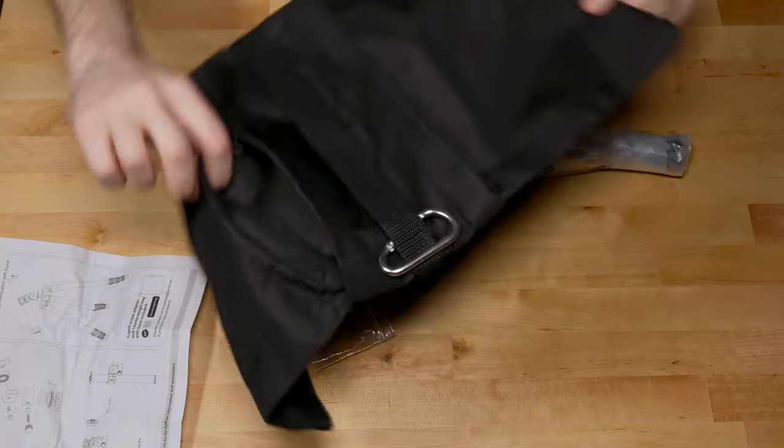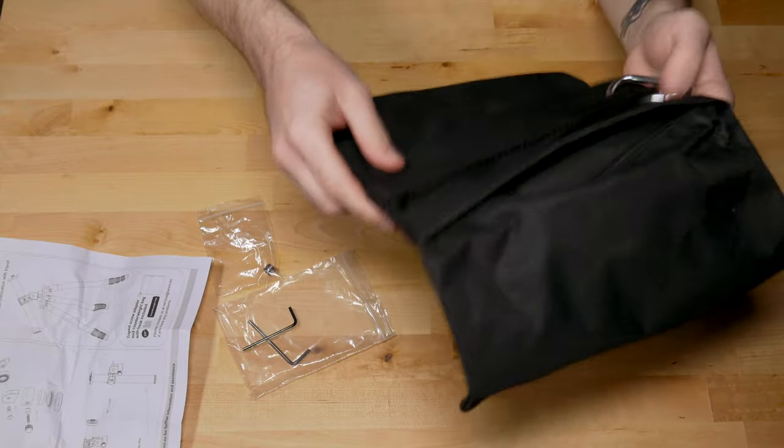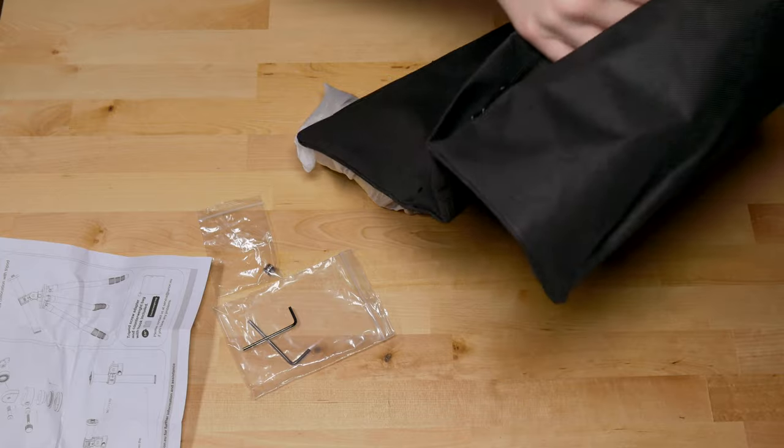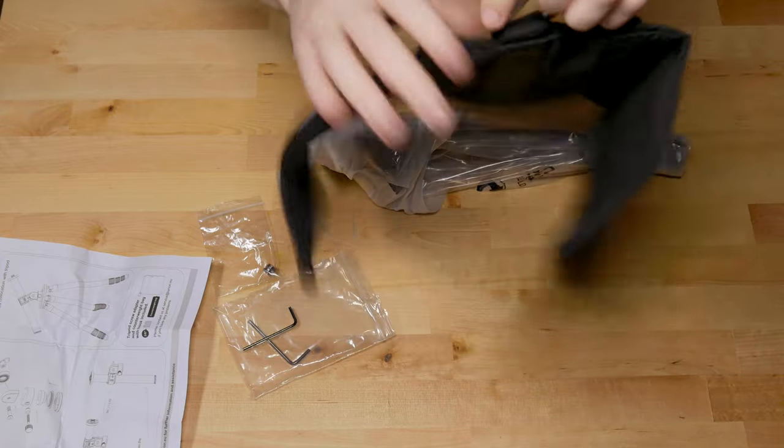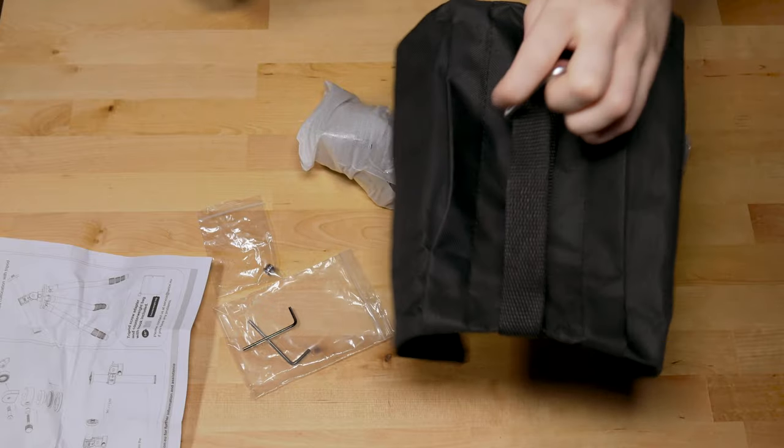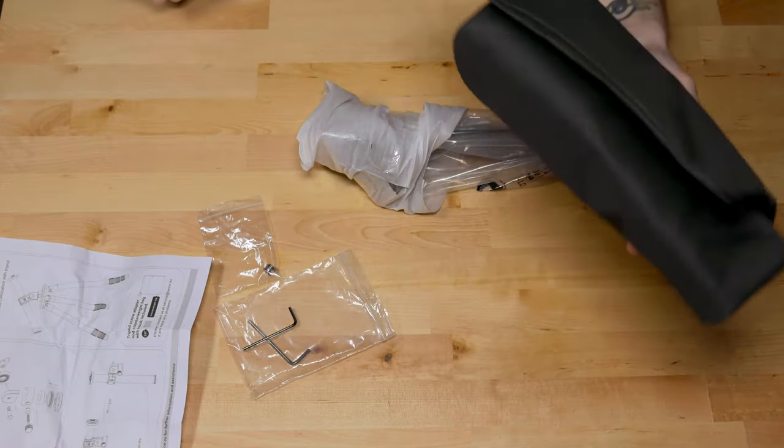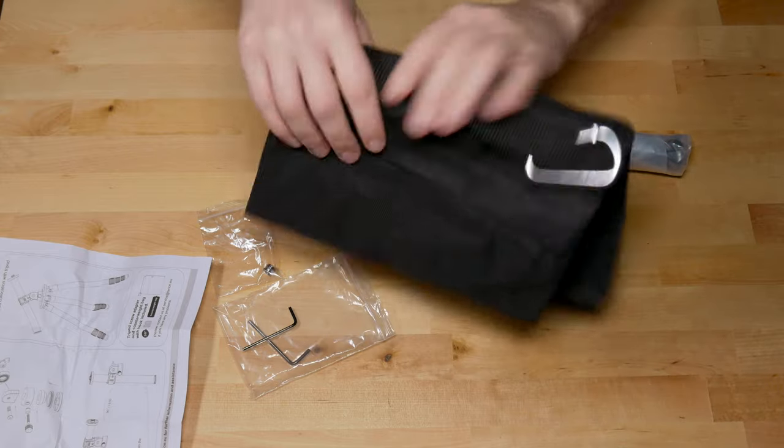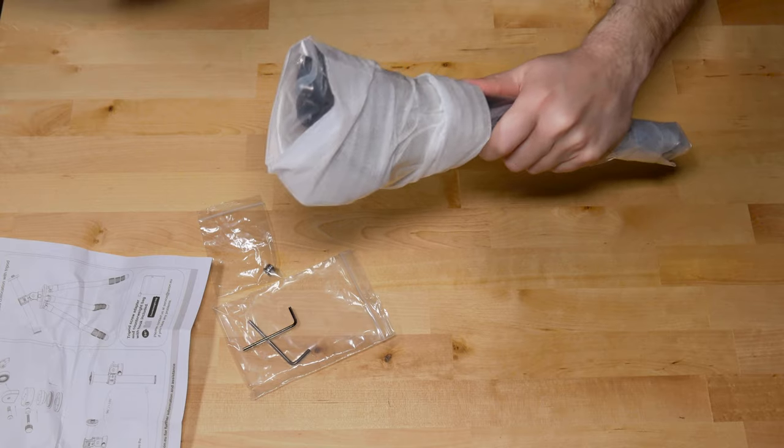This is a sandbag, so when you use anything like a boom, it's going to off-center your tripod, so it's going to try and fall and lean away. A sandbag, you fill it with sand or anything with weight in it, and you use that as a counterweight to your boom arm.